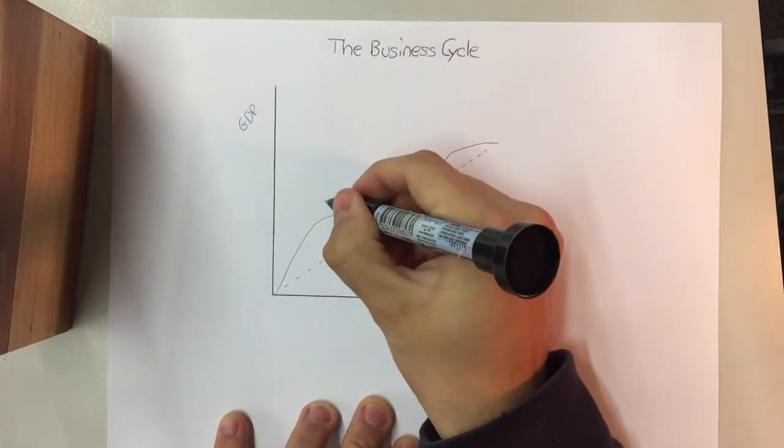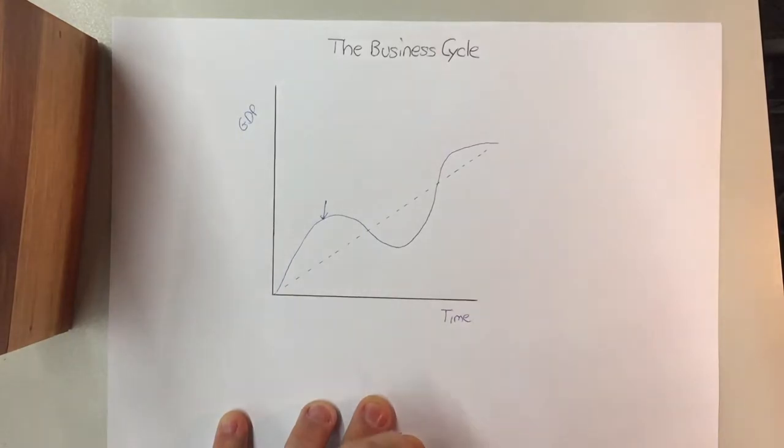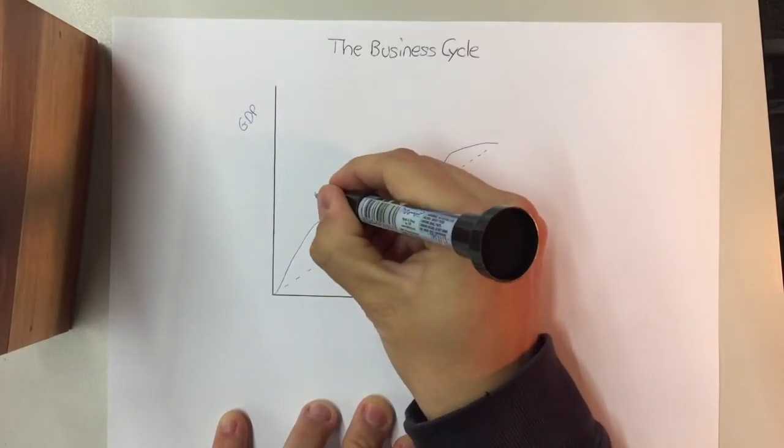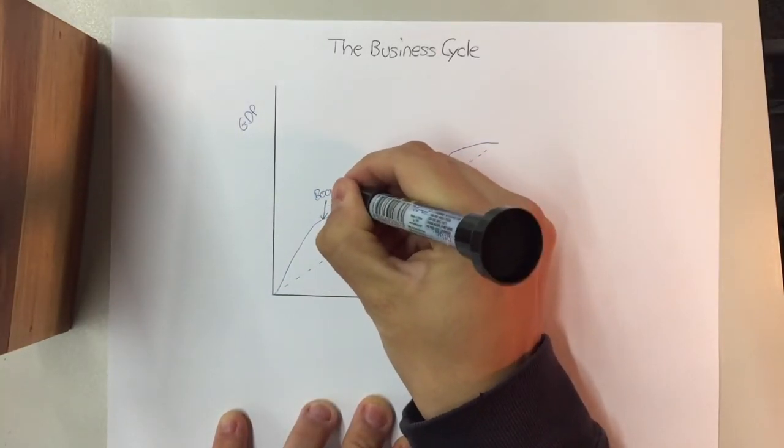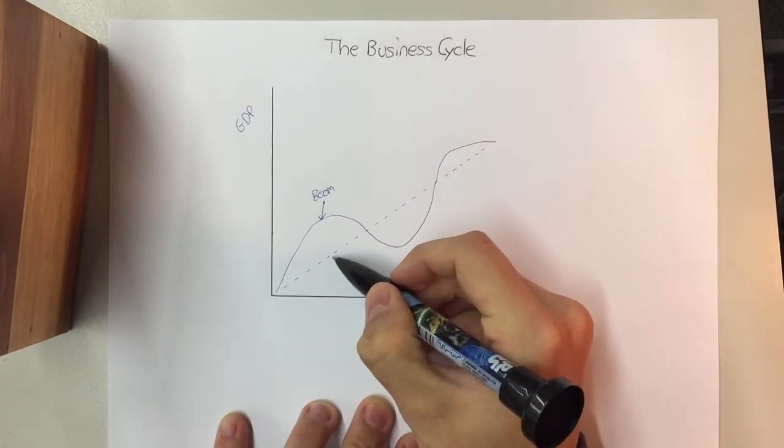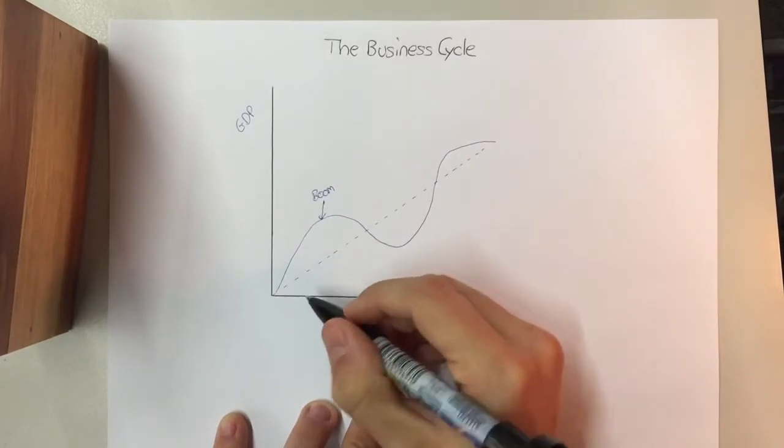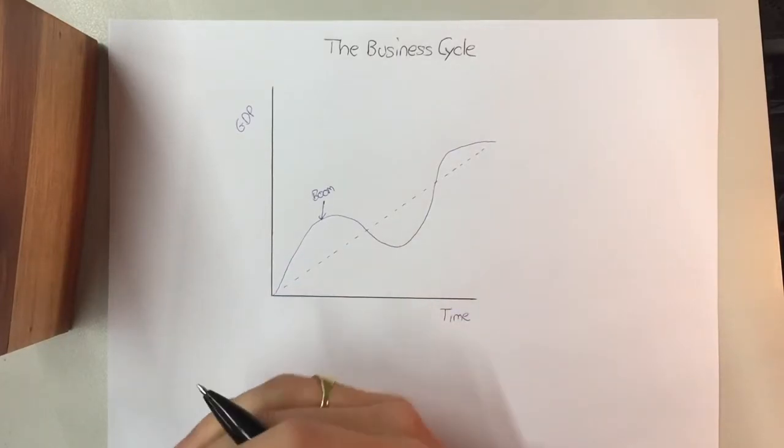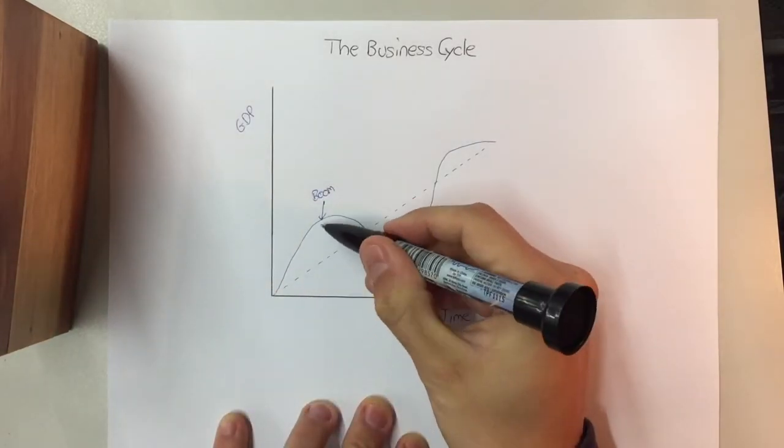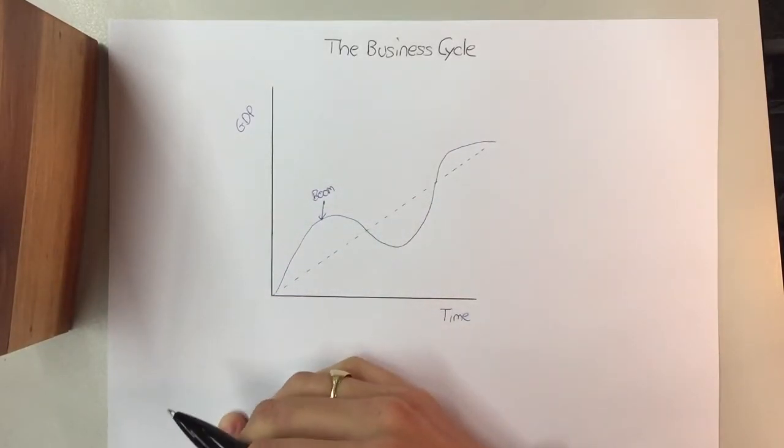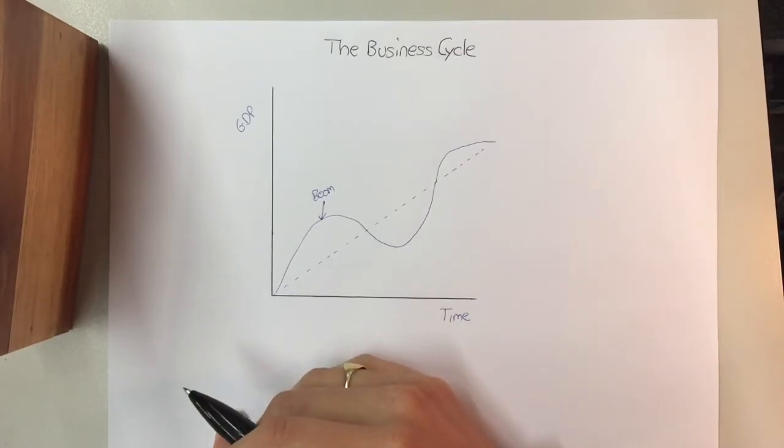So whenever we are up the top, and things are going incredibly well, we have a boom. Now this is where we go beyond our potential. So our potential for the year is say 1.7 trillion, and we go beyond that, and that might be because of foreign investment, that might be because of increased immigration.